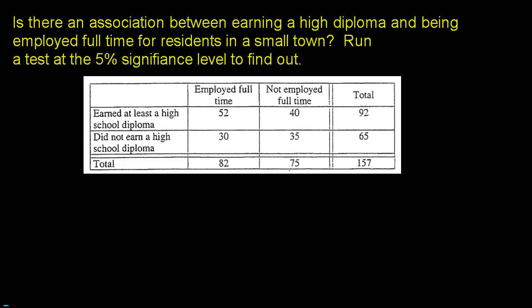Here's the question: is there an association between earning a high school diploma and being employed full-time for residents in this small town? We're going to run a test at the 5% significance level, so alpha equals 0.05. The numbers we see are the observed counts: 52 people with a diploma employed full-time, 30 with no diploma employed full-time, and then 40 and 35. Those are the four categories — two for each variable.